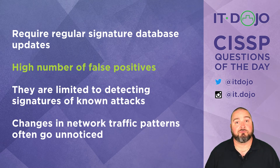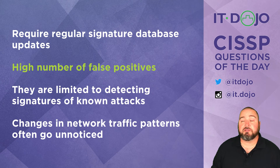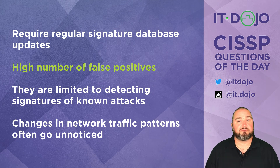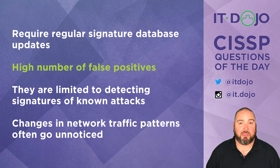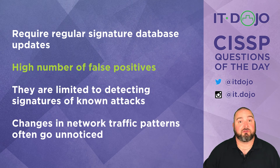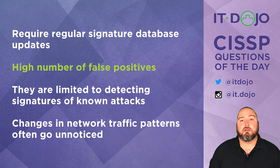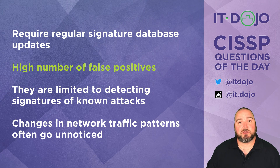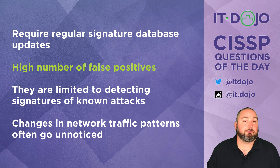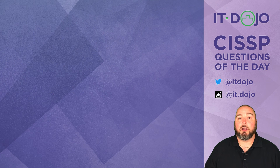Let's look at the other options to be thorough. The third option says anomaly-based systems are limited to detecting signatures of known attacks — nope, that's knowledge-based. Anomaly-based systems are actually good because they can detect things that aren't necessarily known attacks. Knowledge-based systems need signatures: the attack must be known and those signatures must be installed on your IDS. The last option says changes in network traffic patterns tend to go unnoticed — quite the opposite. Changes in traffic patterns are very much noticed by anomaly-based systems, which is exactly what makes them prone to false positives.